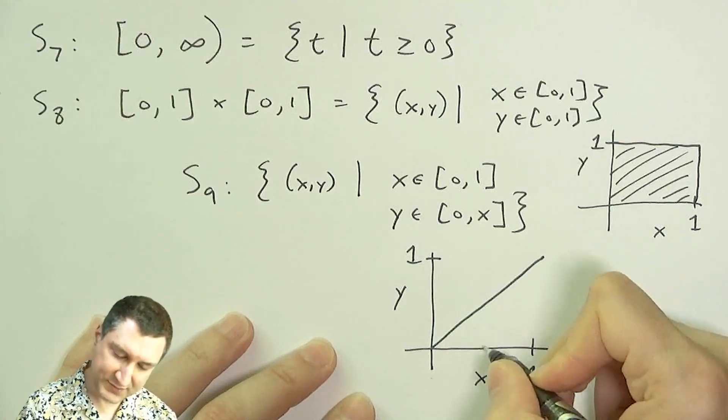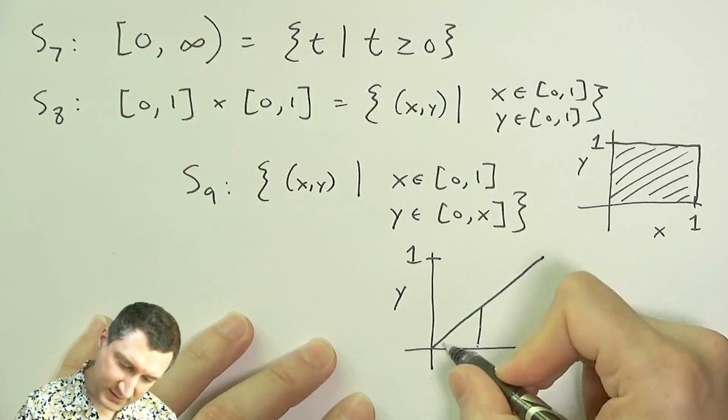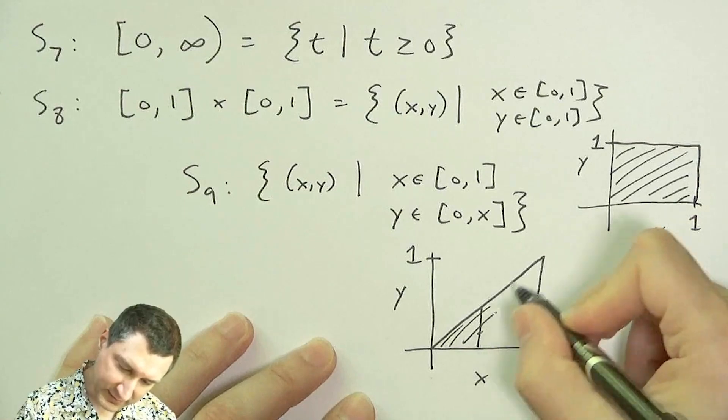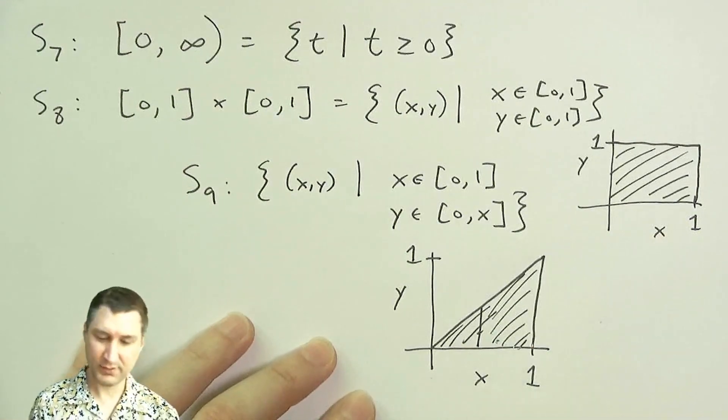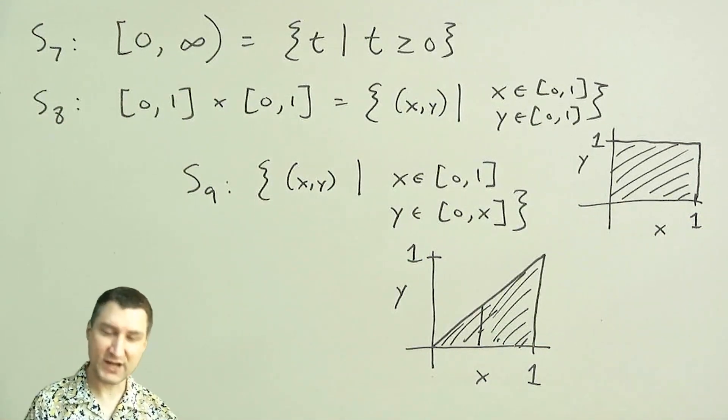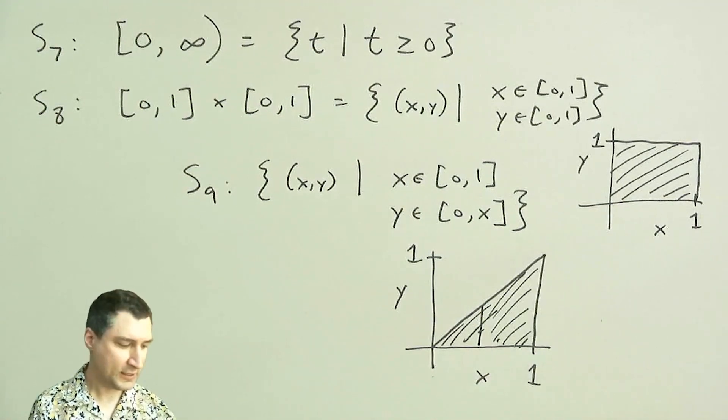So it's saying x could be anywhere in here. But once I pick x, y has to be strictly at or below this line, right? So here I've got a triangle instead of a square. Okay.